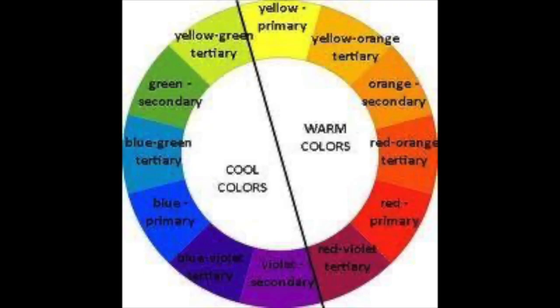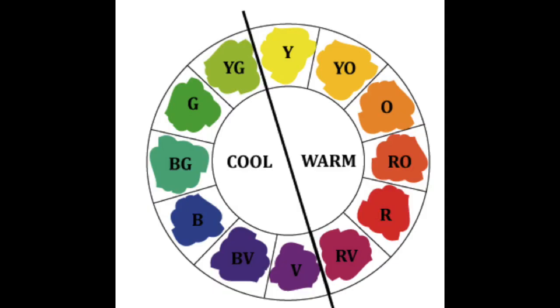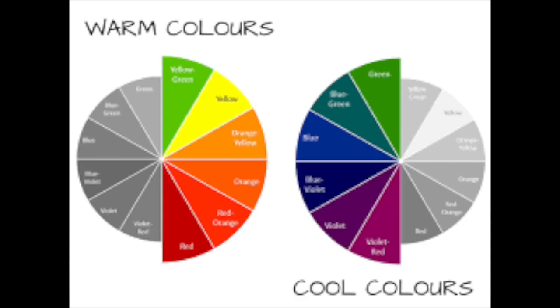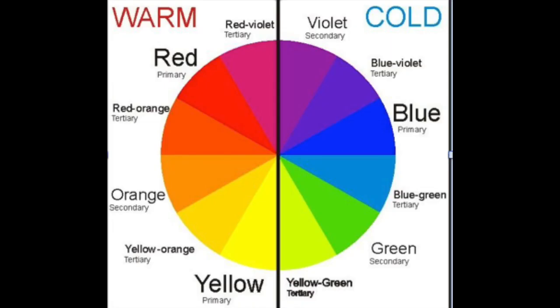Generally, how you use this is you can use what we know about warm colors coming forward in a painting and cool colors receding in a painting to create depth in what you're painting, whether that's a still life or not.